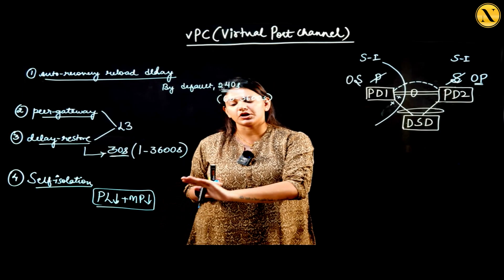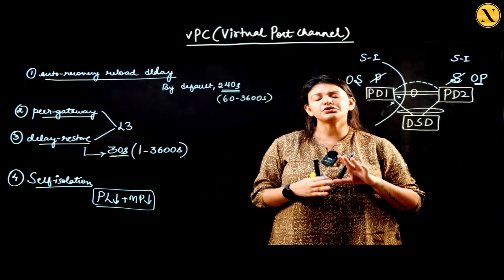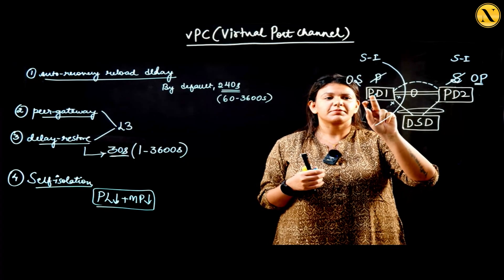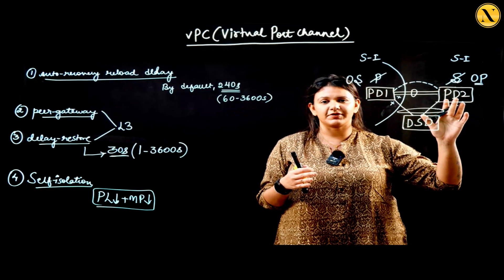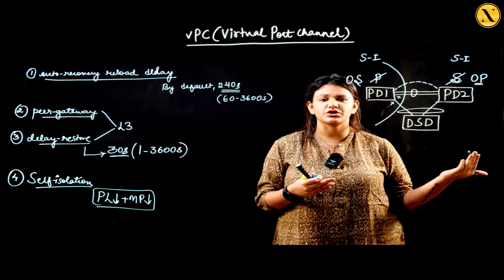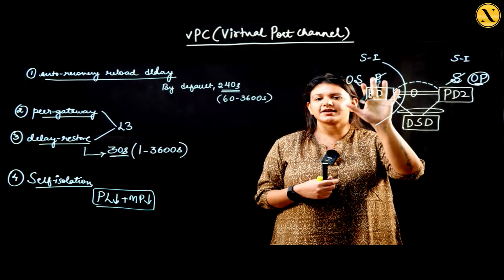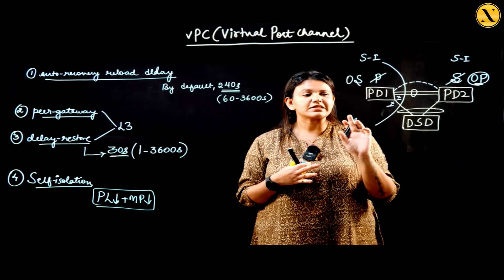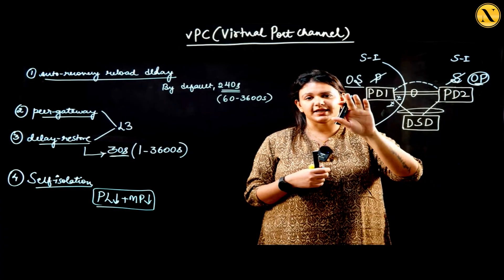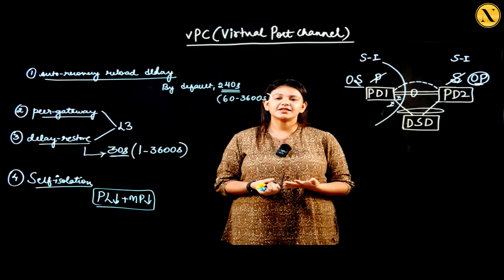This failure scenario — losing both the peer link and member ports simultaneously — is quite rare and uncommon. But if it does occur, self-isolation handles it: the primary uses the peer keepalive link to notify the secondary, which takes over as operational primary. Once the failure is rectified and the links come back up, the originally primary device takes over as operational secondary, since there is already an operational primary. This is what self-isolation does, and with this we conclude the VPC series.